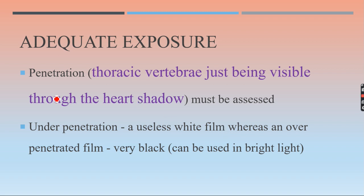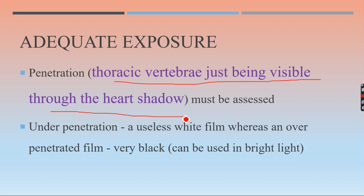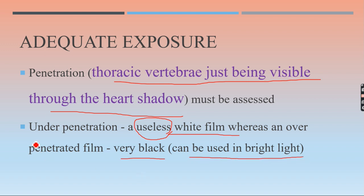A is for adequate exposure — related to penetration of radiation. Adequate exposure is when the thoracic vertebrae are just visible through the heart shadow. If under-penetrated or underexposed, a white film will result and is useless. In an overexposed film — a very black film — sometimes if there is no other way, it can be used in bright light.